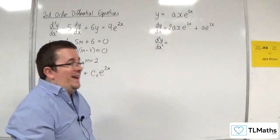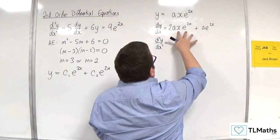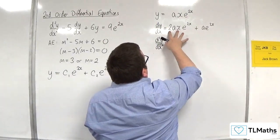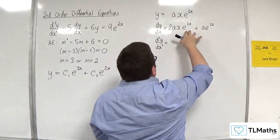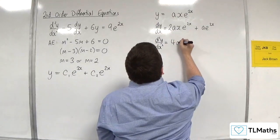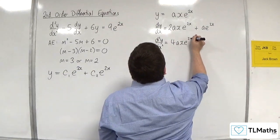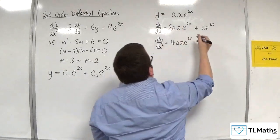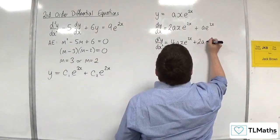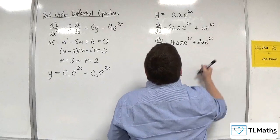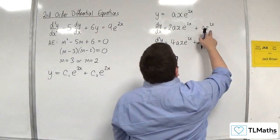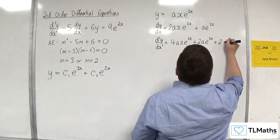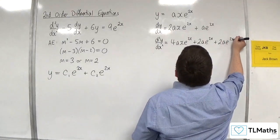Now I need to differentiate again. So I'm going to have to use the product rule again on this term. So first times the derivative of the second would be 4axe to the 2x, plus the second times the derivative of the first, so plus 2ae to the 2x.